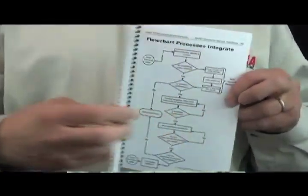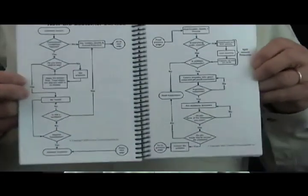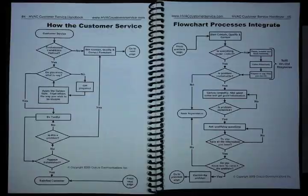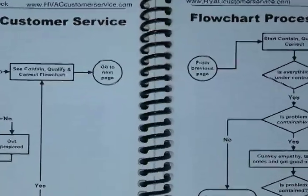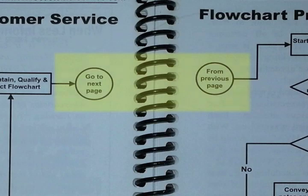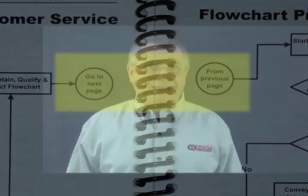And if you go to pages 64 and 65 in the textbook, you'll also see this shape — the page connector. This shape indicates that a flowchart continues on a different page, and the page number is usually indicated inside the circle.